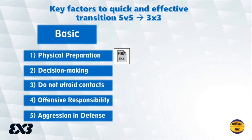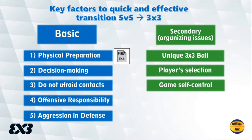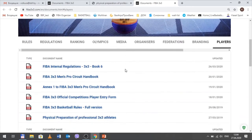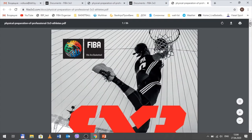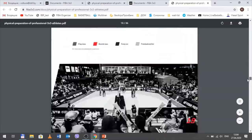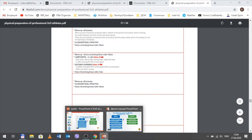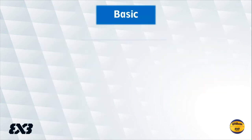We can define the key factors for a weak or effective transition from 5-on-5 to 3-on-3. For simplicity, we divided them into two groups: basic factors related to players' skills and abilities, and secondary organizing issues. We'll briefly go through each of them, except physical preparation — that is a specific subject requiring thorough consideration, and there is a comprehensive study available on the official FIBA 3-on-3 website.